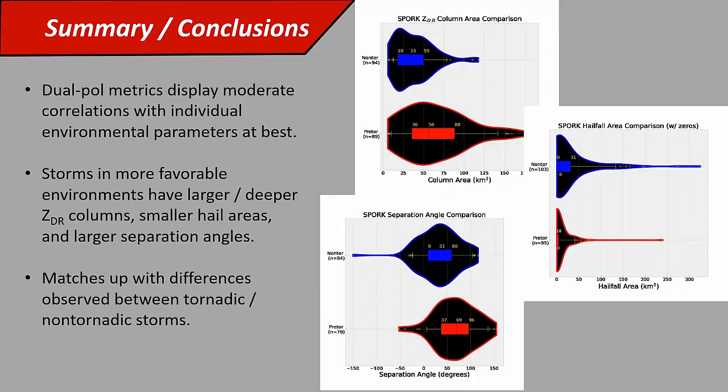Summary conclusions. The dual-pole metrics I looked at displayed moderate correlations with individual environmental parameters at best. There's some influence from the environment, but they may also be telling us more information about the storm itself. Storms in more favorable environments have larger and deeper ZDR columns, smaller hailfall areas, larger separation angles. This matches up with what we've seen in that same sample comparing pre-tornadic storms to non-tornadic storms. The pre-tornadic storms also tend to have larger ZDR columns, smaller hailfall areas, and larger separation angles. So some of that difference may just be telling us that these pre-tornadic storms are in more favorable environments.